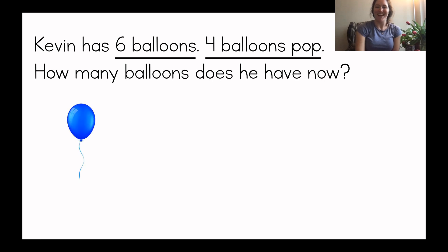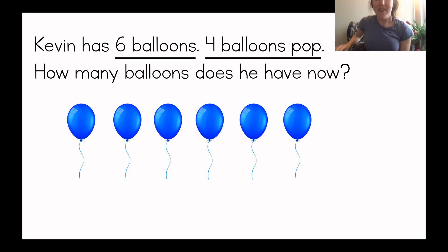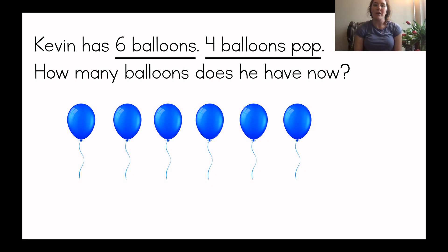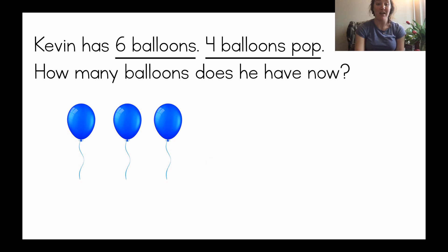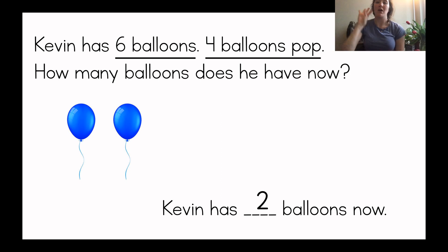I'll count: one, two, three, four, five, six — Kevin has six balloons. And then what happens to his balloons? Four of them pop. Watch them pop: one, two, three, four. If four balloons pop, Kevin has how many balloons now? He has two balloons now — one, two. Kevin started with six balloons, four balloons popped, now he has two. Six minus four equals two.